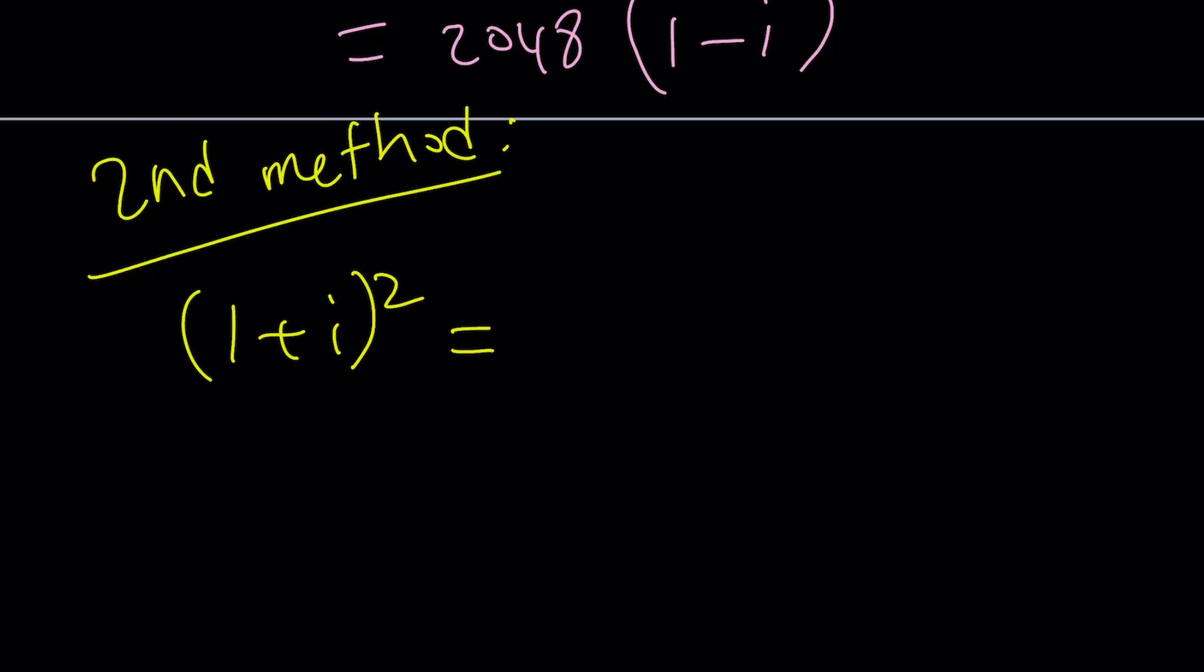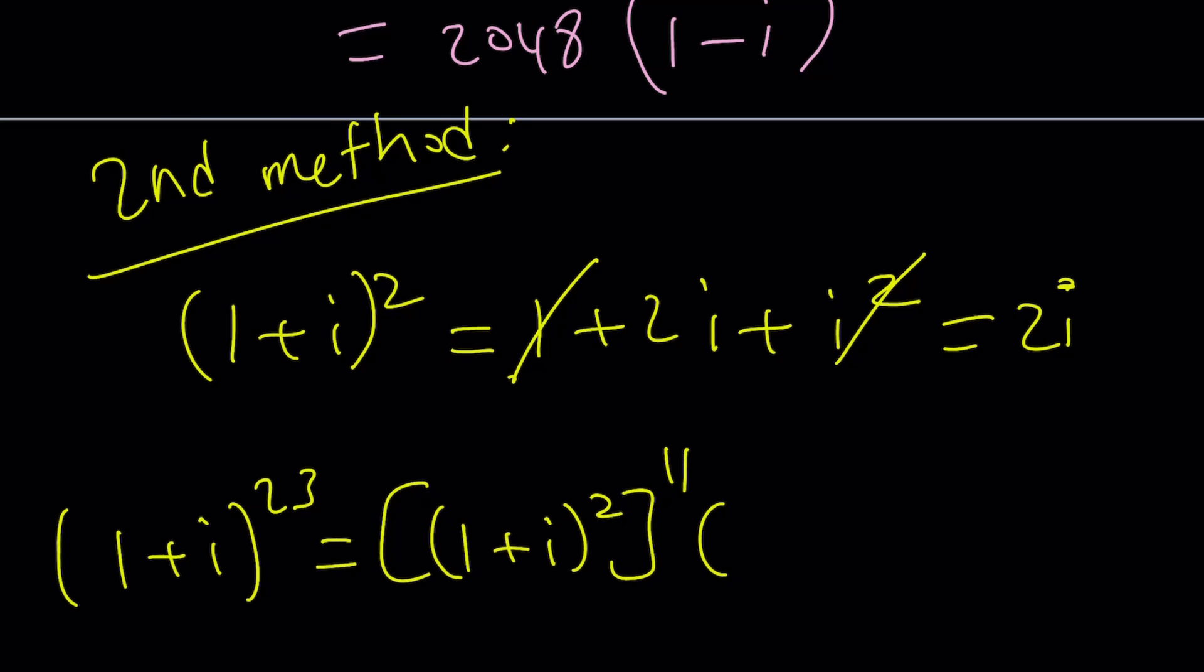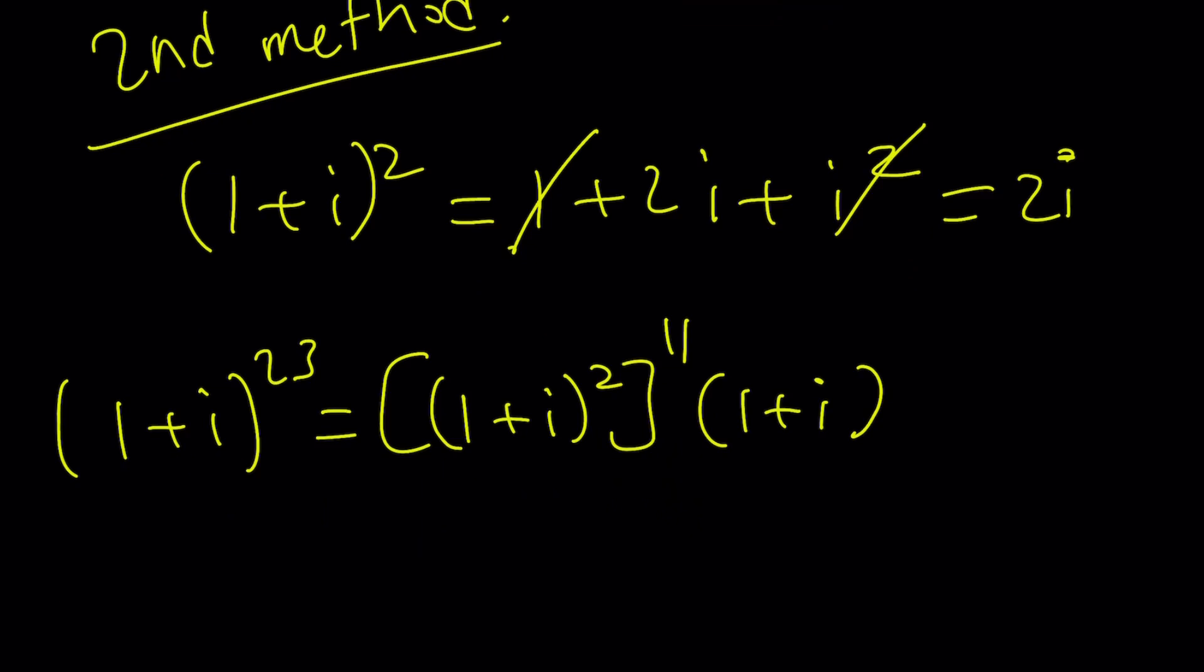Why do we do that? Because 1 plus i squared is special. And if you remember, we used this idea in a recent video. If you expand this, i squared is negative 1, so this cancels out, and you get a super duper special power. Now, this helps me raise this guy to the power of 23, because I can do the following. Raise it to the second power, and then raise that to the 11th power. And then just multiply by 1 plus i once, and you got it.